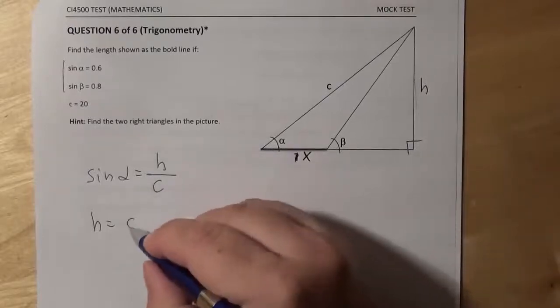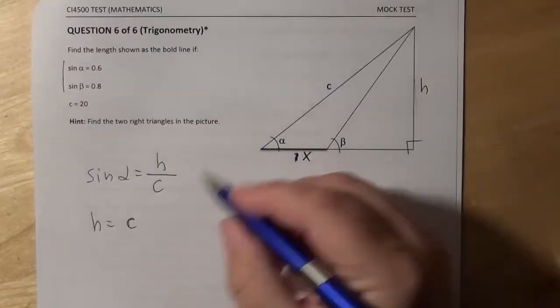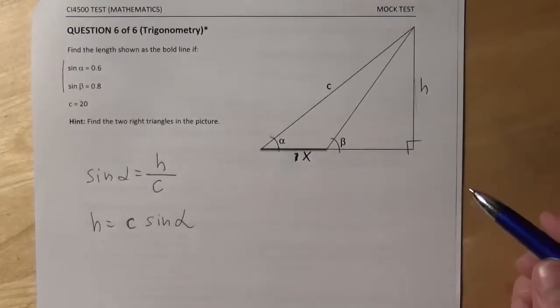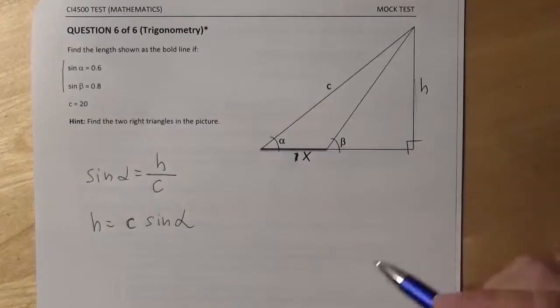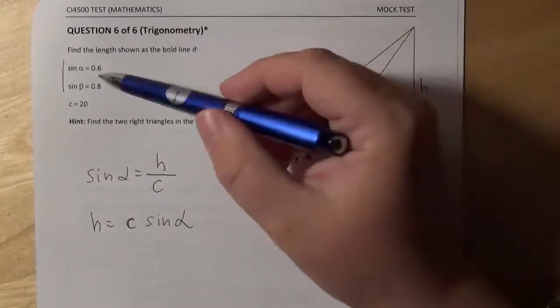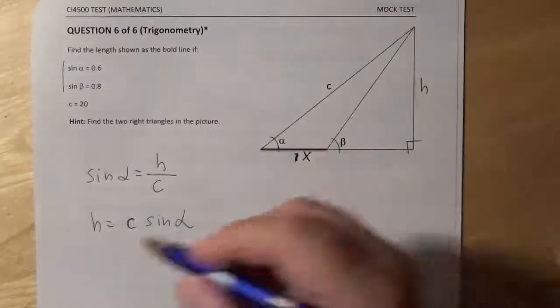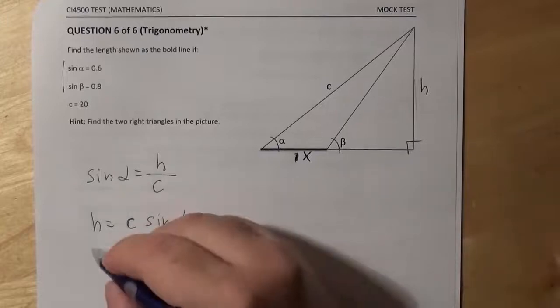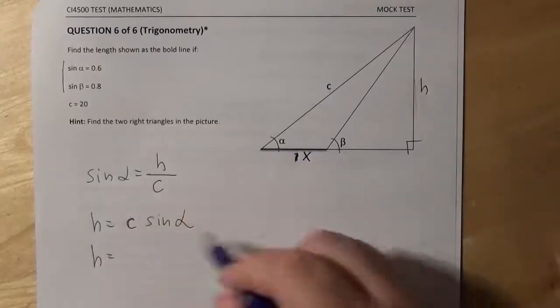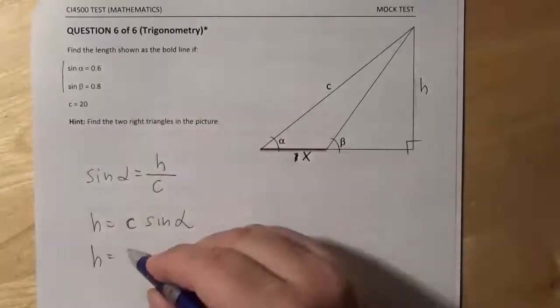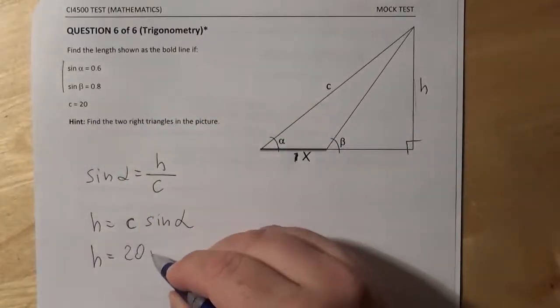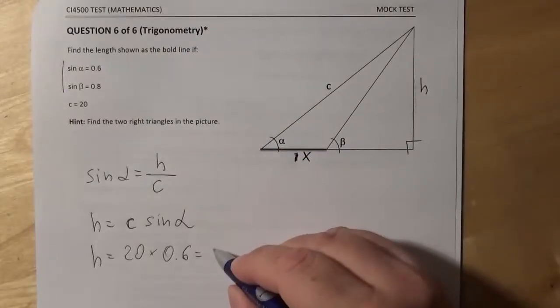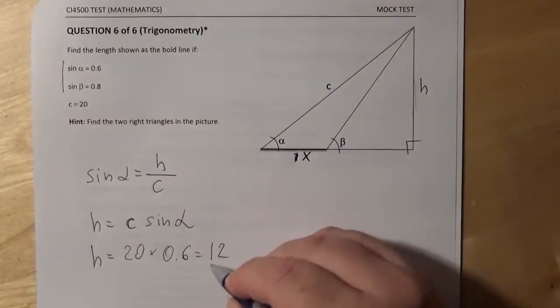So H is C, C is actually a hypotenuse, C sine alpha. And we can go a little bit farther and we can use these numerical values here to find the exact value of H. So H equals C, the hypotenuse, it's 20, times sine alpha. Sine alpha is 0.6, so we know that H is 12.